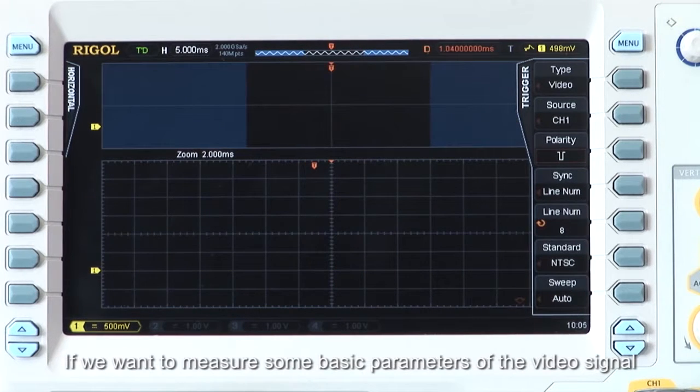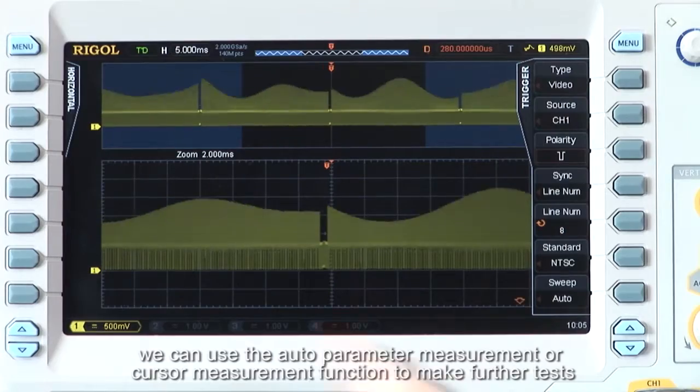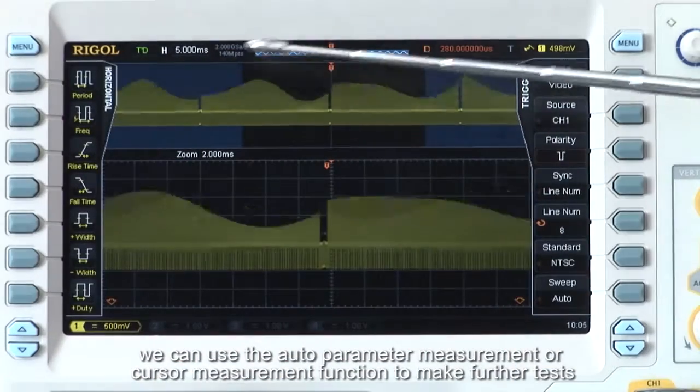If we want to measure some basic parameters of the video signal, we can use the auto-parameter measurements or cursor measurement functions to make further tests.